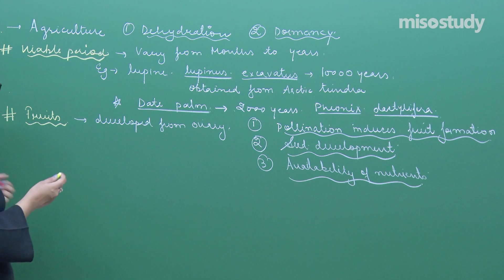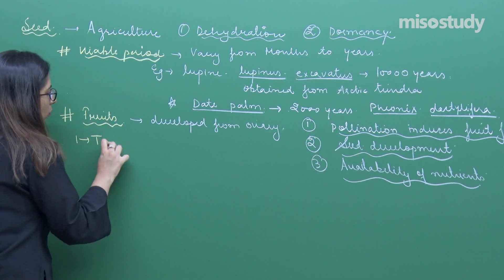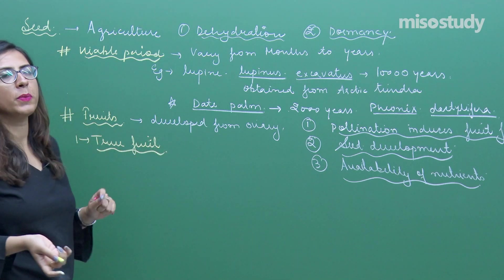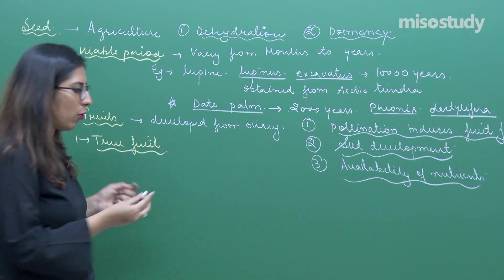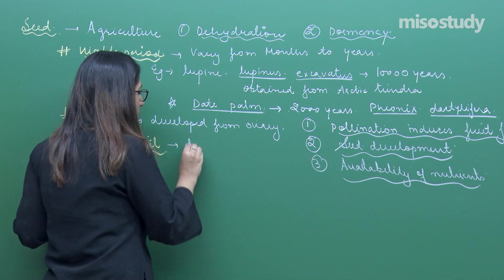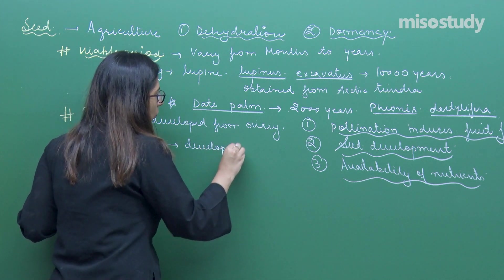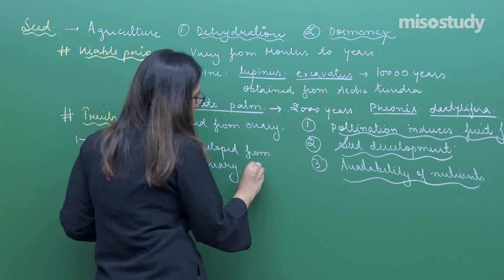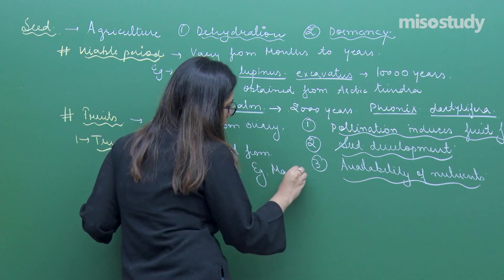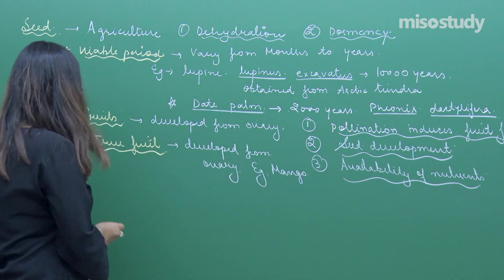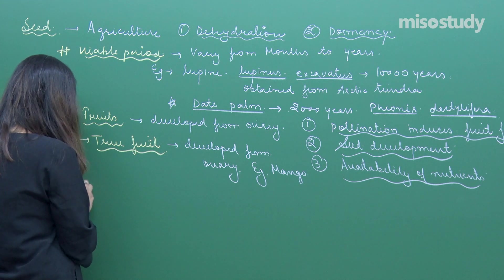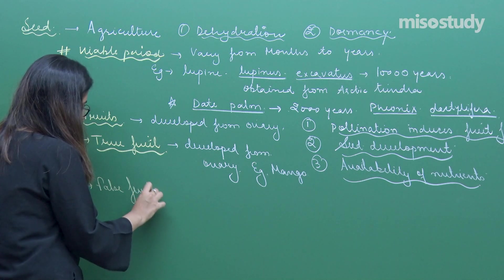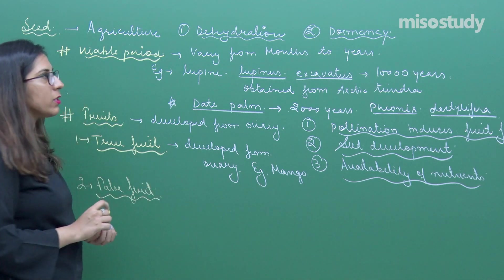On average, the fruits are of different types. The first is termed as true fruit. True fruits are those which are developed from ovary - you can take an example of mango. Second type is false fruit. False fruits are not developed from ovary; instead they are developed from other parts like thalamus.